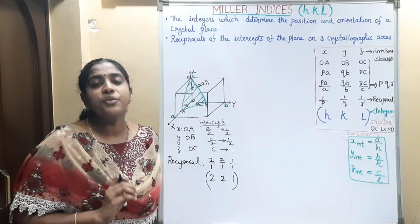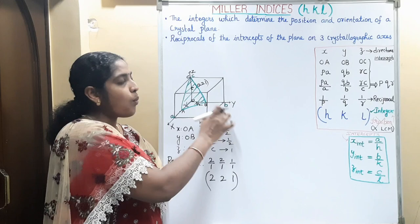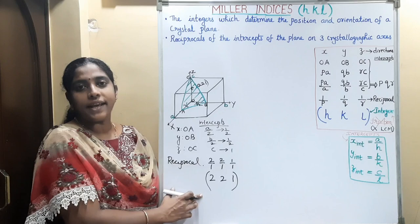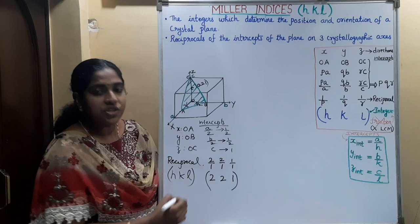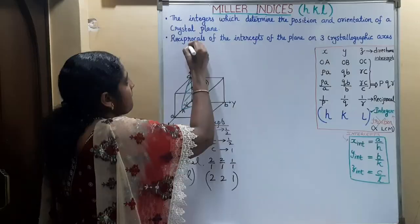So how do we find the Miller indices of a particular plane in a crystal? We have to find the intercepts along the x, y, and z-axes, take the reciprocal of these intercepts, and write those integers within a curved bracket. That will represent the Miller indices. In general, we write the Miller indices as H, K, L.